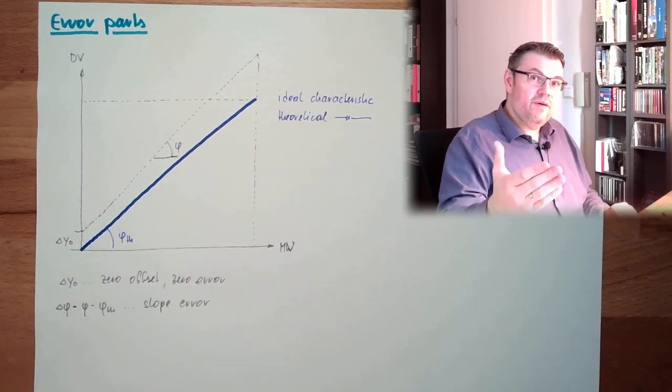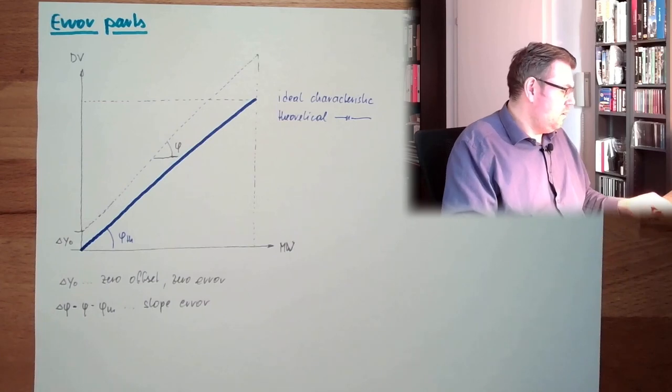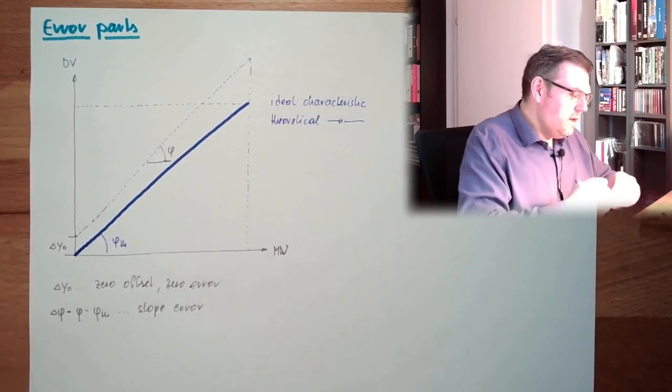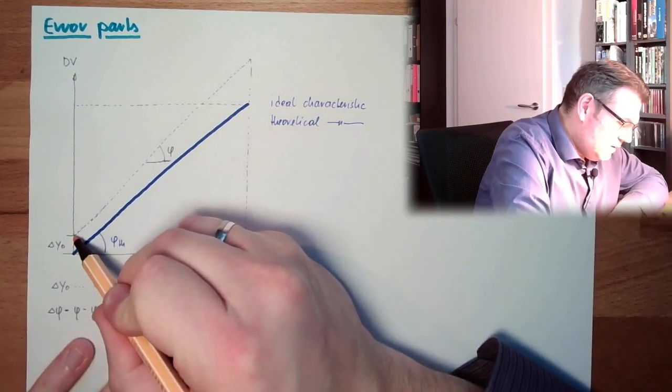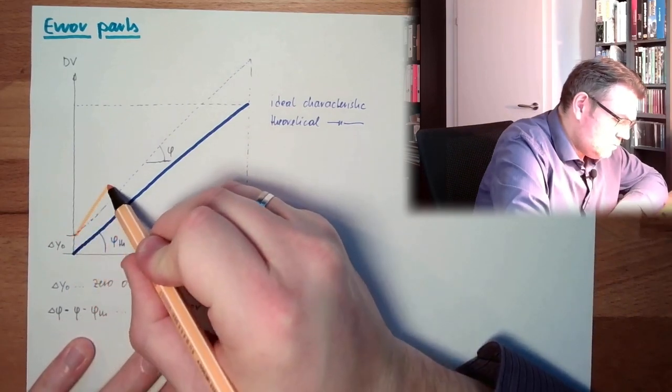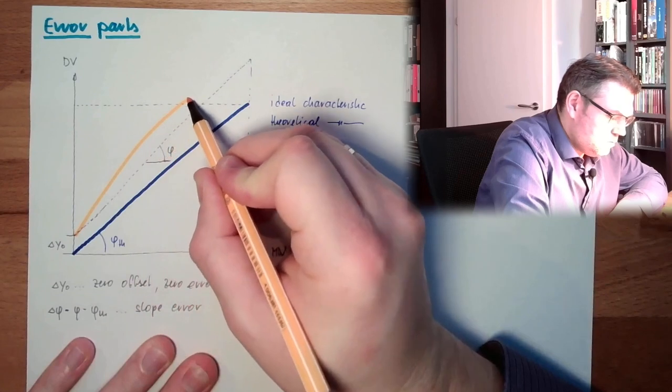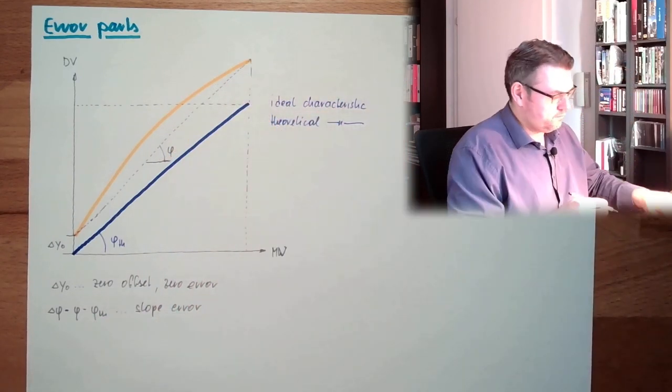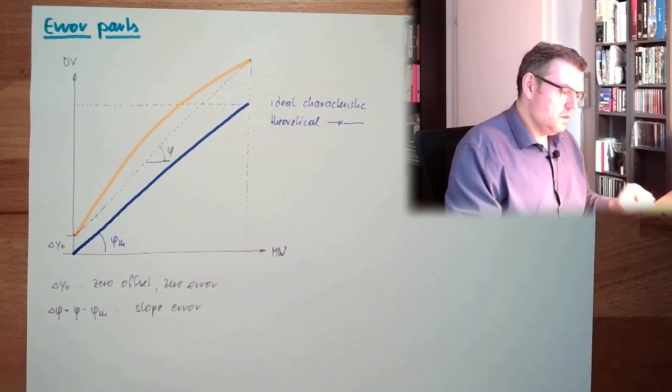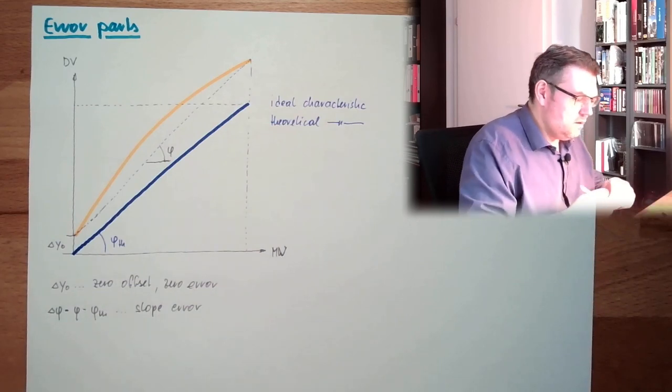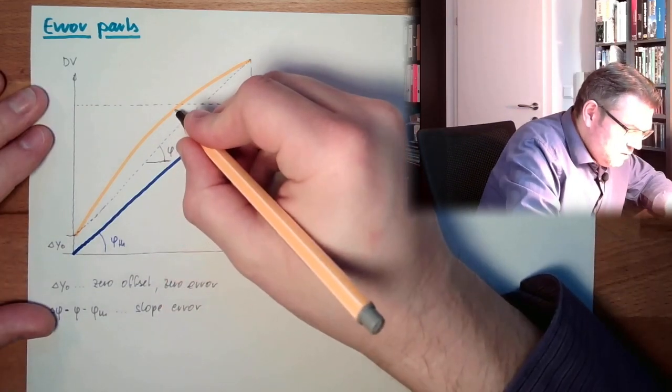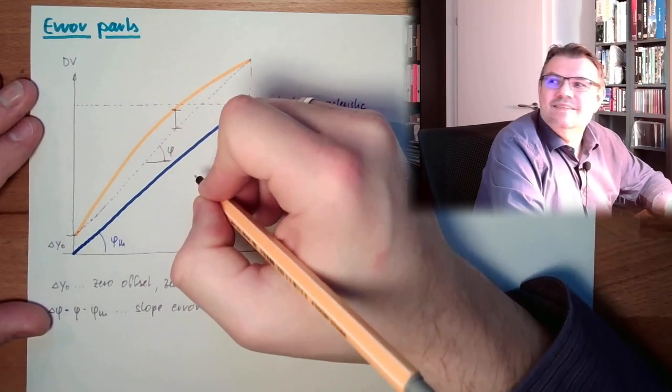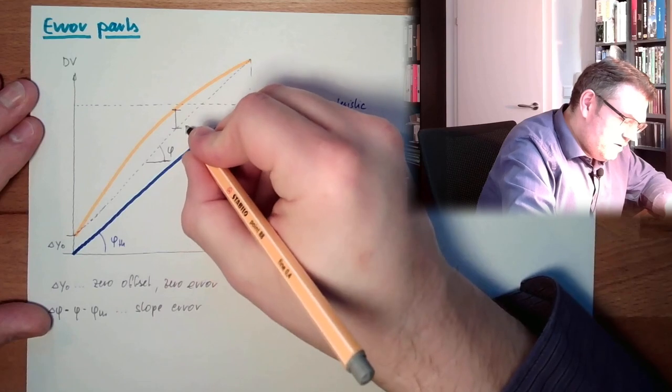And then we might have a linearity problem, so that we are not linear like this, that we are ending up in having something like this. This is the linearity error, FL.